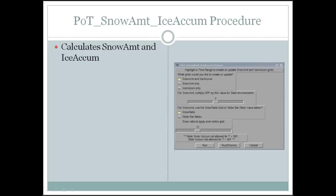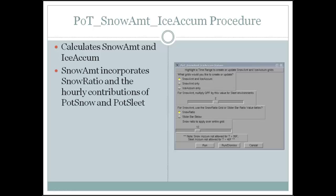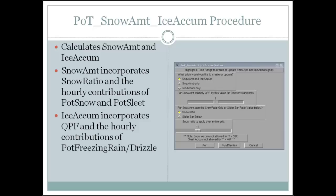After the probability type grids — step two — we move to step three: running the snow amount and ice accumulation procedure. Ninety-five percent of the time you're just running the defaults. The snow amount procedure takes in your snow ratio grid — you can use a common snow ratio across the entire grid or a snow ratio grid — and uses hourly contributions of snow and sleet. The ice accumulation procedure takes in QPF and all contributions of freezing rain and drizzle. It's been enhanced to follow the new ice flat accumulation and ice line accumulation grids, and now requires wind input as well.